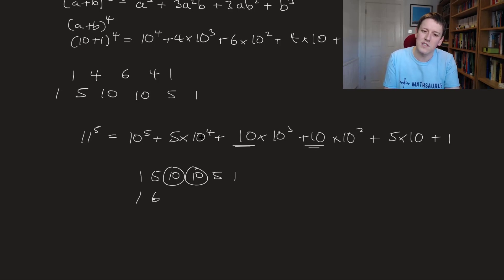So I'd get 1, 6, I would have a 0 here, but of course I'm also going to pull a 1 from this other 10 into here to get 1, and then 0, 5, 1, and that gives me 11 to the power of 5.